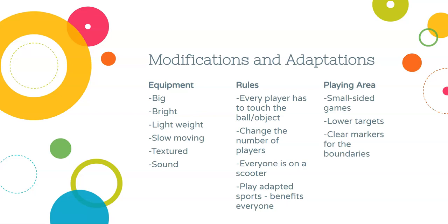Equipment with sound is very helpful for students with visual impairments. If they can hear the equipment coming to them, it's easier for them to know where it is. I have a student who is completely blind, so I bought bells online and found wristbands I can attach to nets and hoops. When a ball hits that bell or net, the bell makes a sound so my student knows he was successful. You can also buy balls with beepers or bells inside.